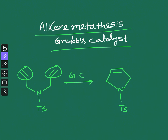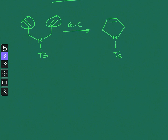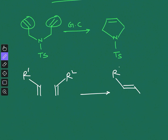Grubbs catalyst is very important — many questions come in CSIR NET and GATE exams from this topic. In a metathesis reaction, a simple example: you have alkene R1 and another alkene with R2, and if you use a metal catalyst like Grubbs catalyst, an exchange of the alkene occurs. You get ethylene and these two groups are now linked.